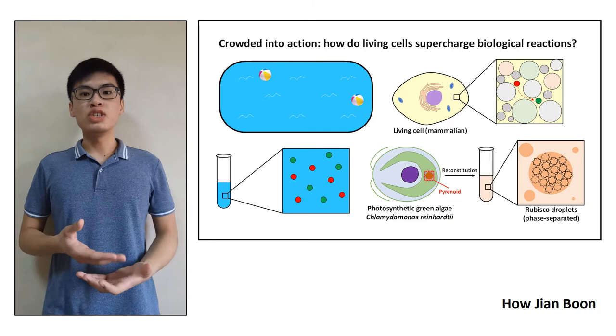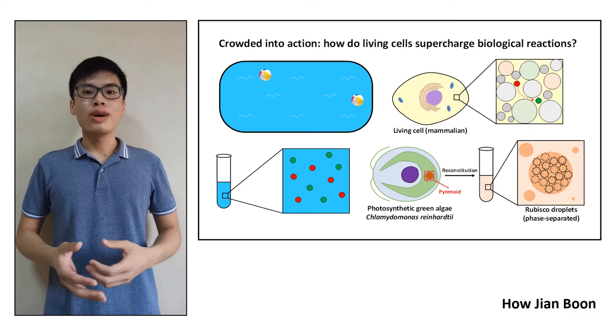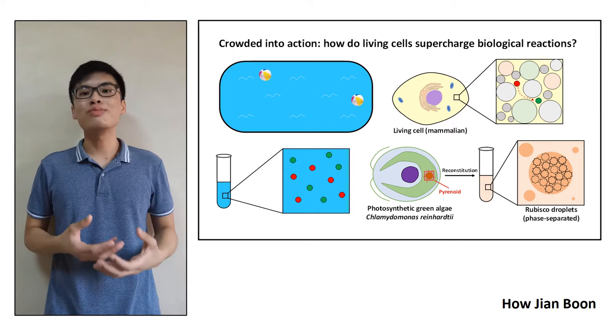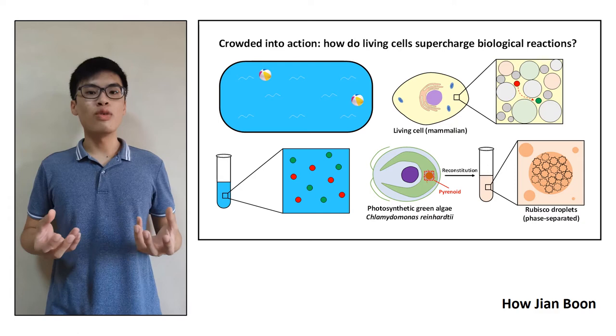However, far from an empty swimming pool, the internal environment of the cell is actually highly crowded by other biomolecules, including other proteins. This effectively restricts the volume available for two proteins to move about and therefore increases the chance of them making contact.